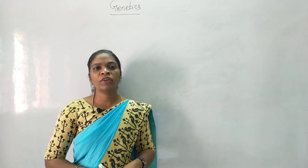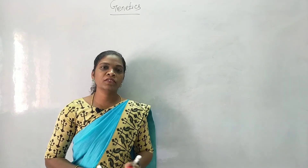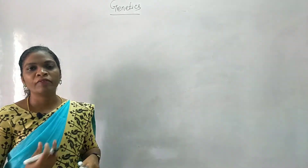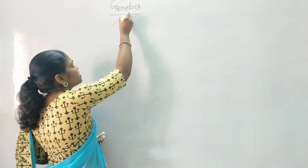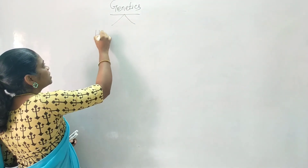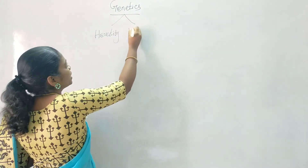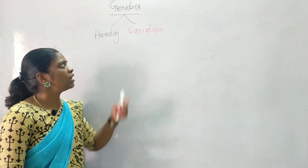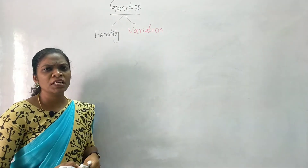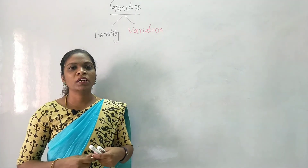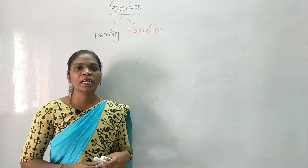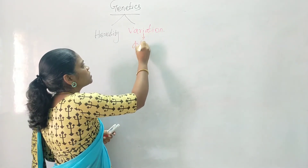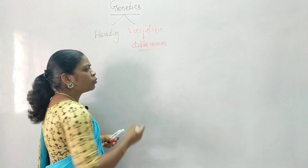Welcome to Katherine's tutorial. In this video we learn about what is variation, types of variation, and the contribution of Mendel towards genetics. Before knowing about those terms, we should know what is genetics. Genetics deals with two important criteria: one is heredity and the other is variation. Heredity means we obtain characters from our parents, but even though we obtain characters from our parents, we are not exactly like them — we show some differences, and these differences are known as variation.